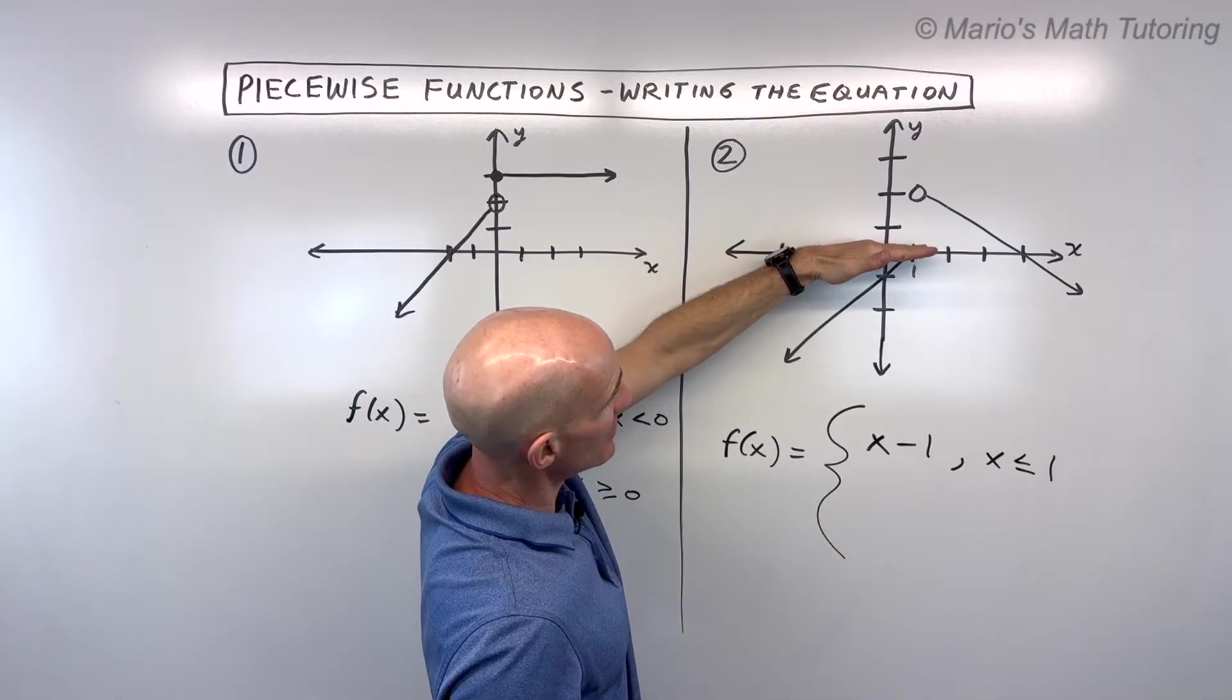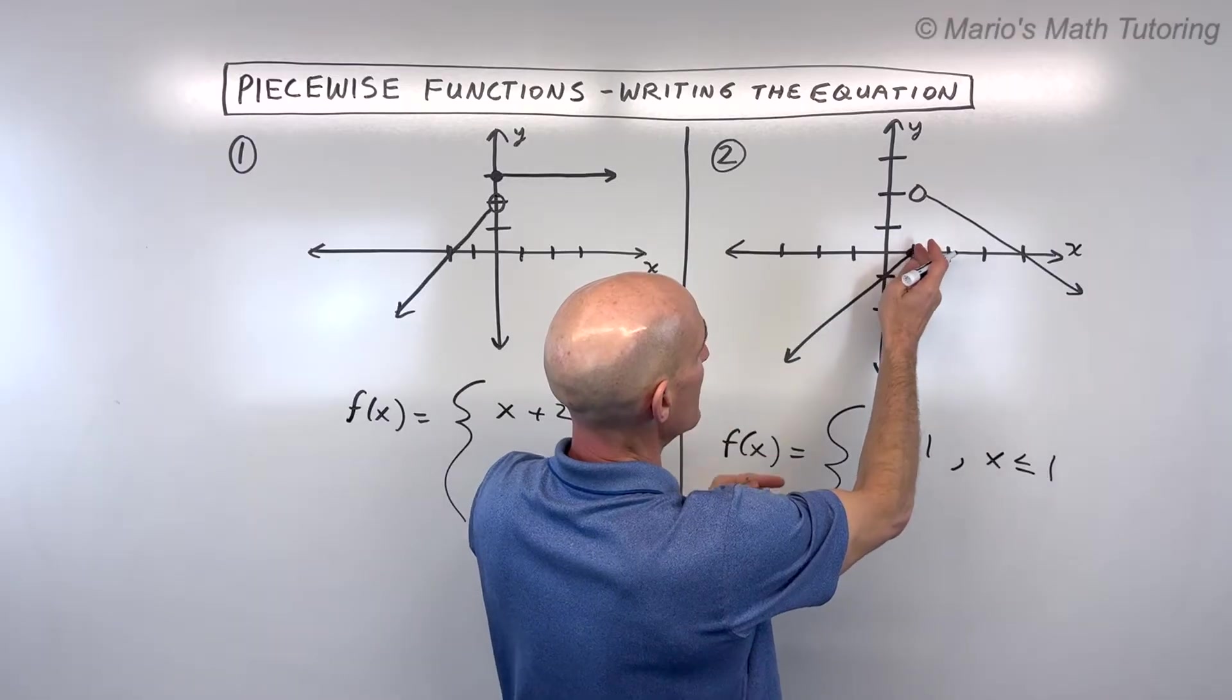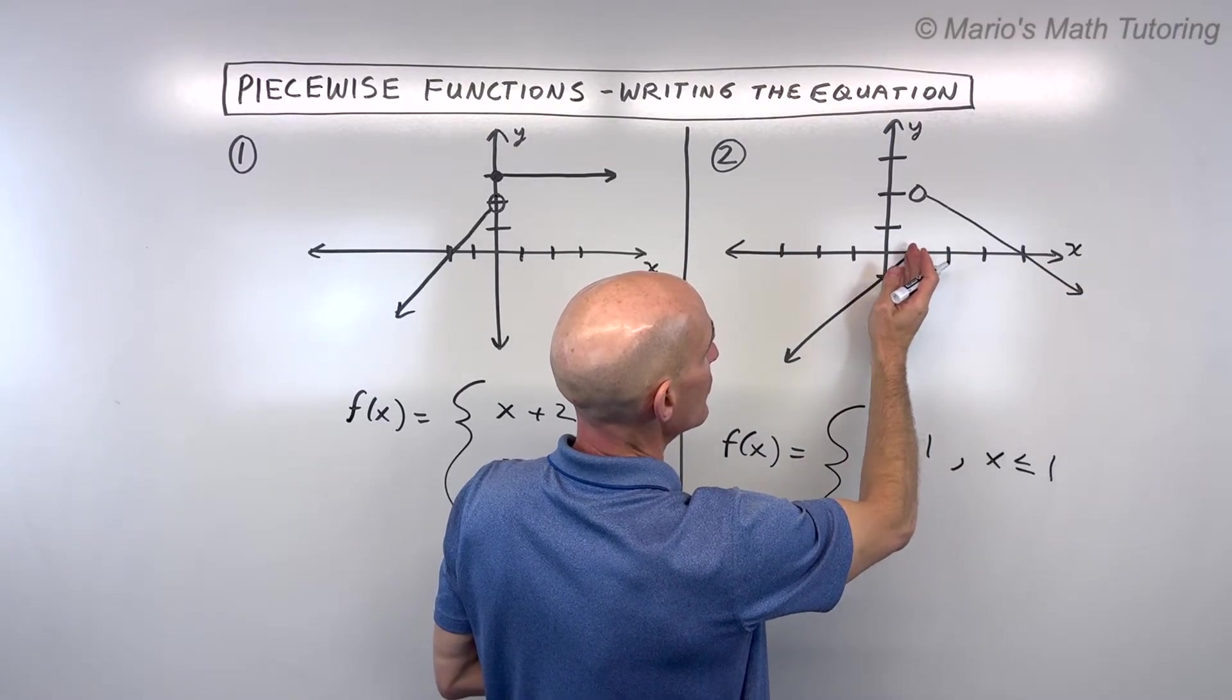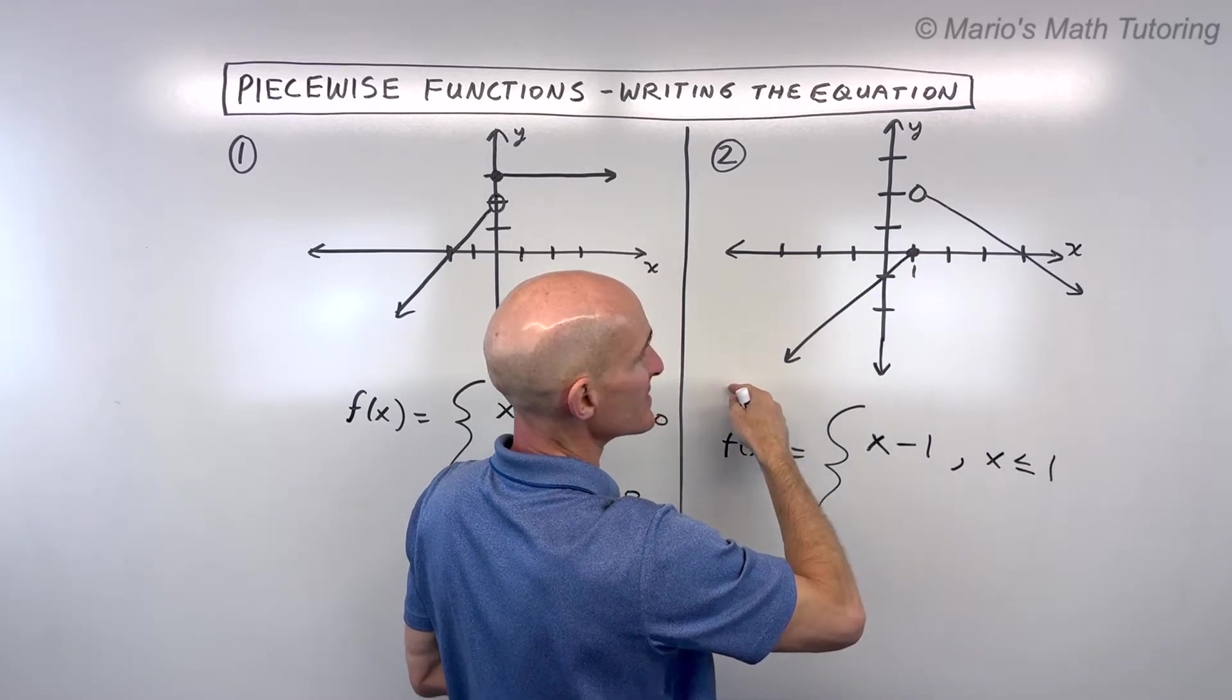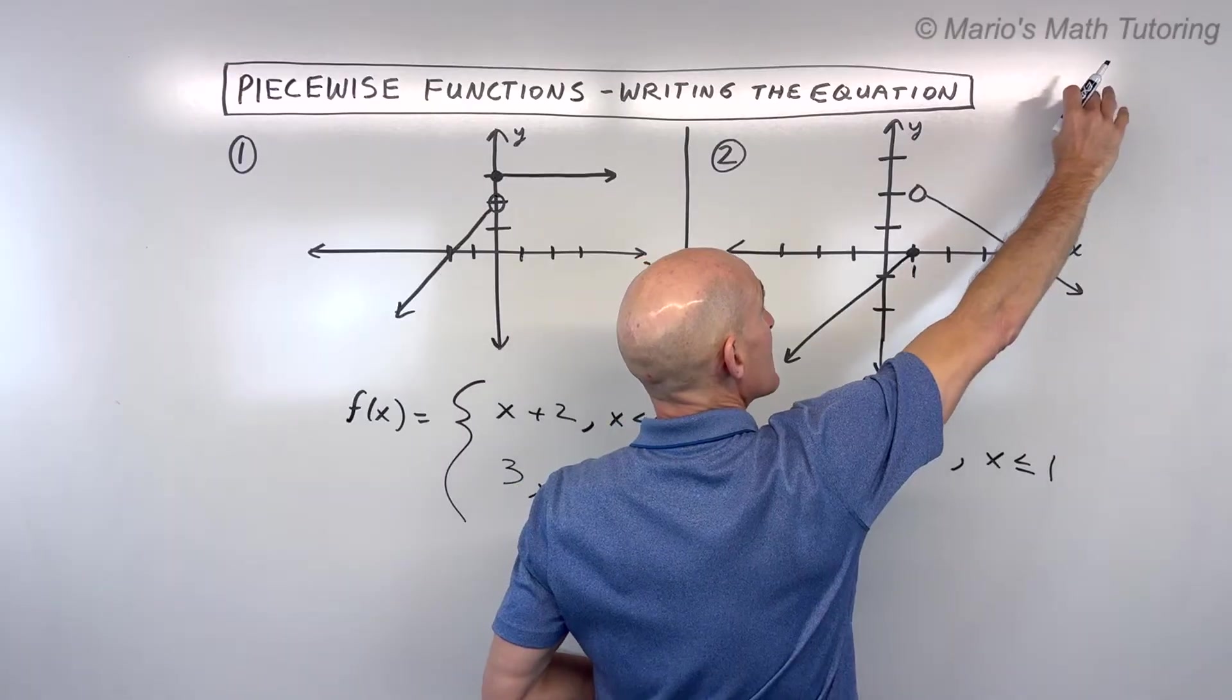Now you don't want to make a mistake and start thinking about the y's, like oh when it's below zero here. No, we say for what x values am I dealing with. So we're less than or equal to 1 on this line. And it only is this portion, otherwise the line would continue, right?